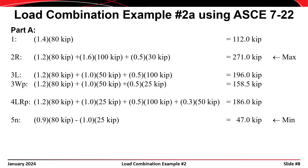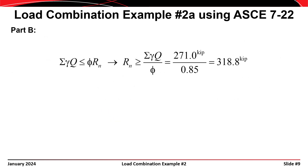When evaluating load combination 5 for the case where wind causes uplift, we substitute a value of positive 25 kips instead of negative 25 kips, because there is already a negative sign in that combination. If we substituted negative 25 kips, the wind load would end up in the same sense as the dead load, which is not what combination 5 is meant to capture. Now that our required strength — the sum of gamma times q — is 271 kips, we divide by the resistance factor of 0.85 to get the required nominal strength R sub n, which is 319 kips.